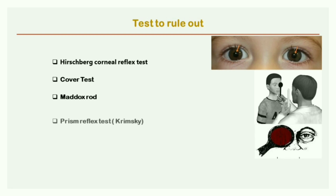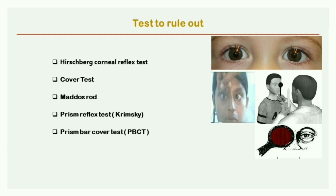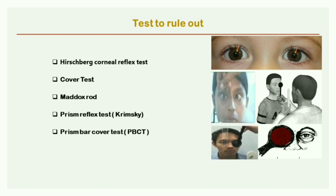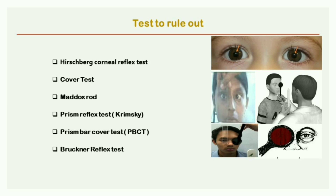Fourth is the Krimsky test, where a prism is placed in front of the deviating eye until the corneal reflex becomes symmetrical. Fifth is the prism bar cover test (PBCT), where the prism power required to negate the ocular movements equals the angle of deviation. The last is the Bruckner test, used to compare the brightness of the pupillary red reflex for both eyes.